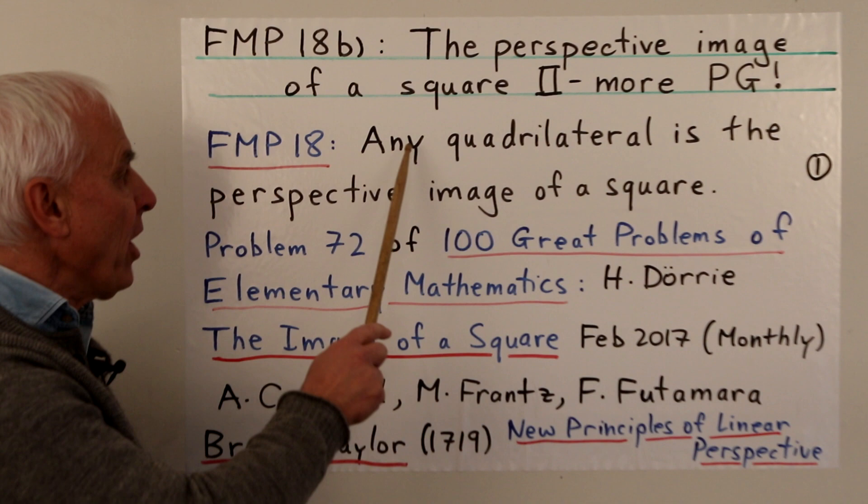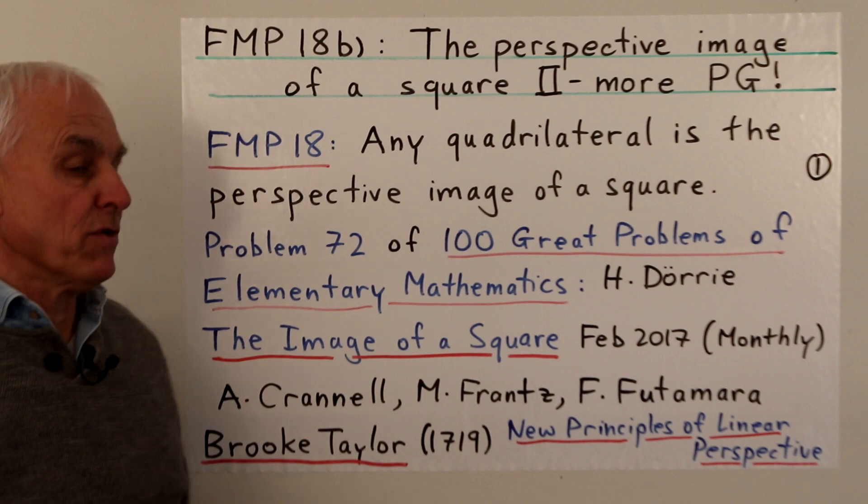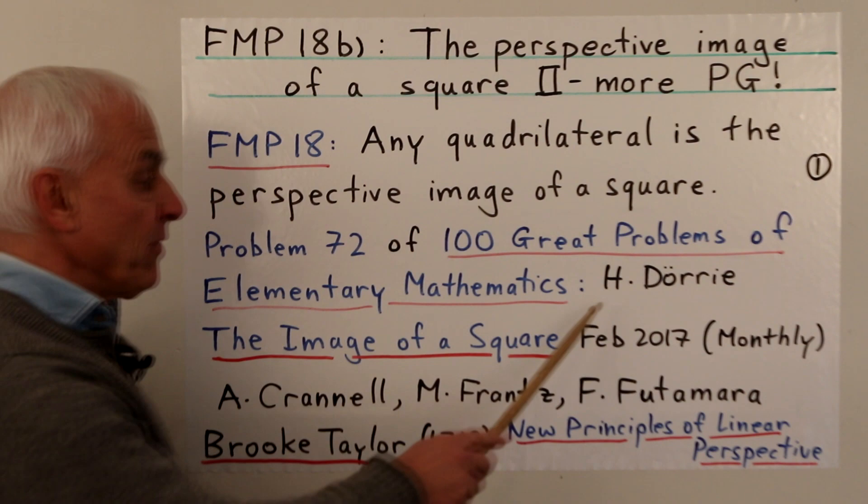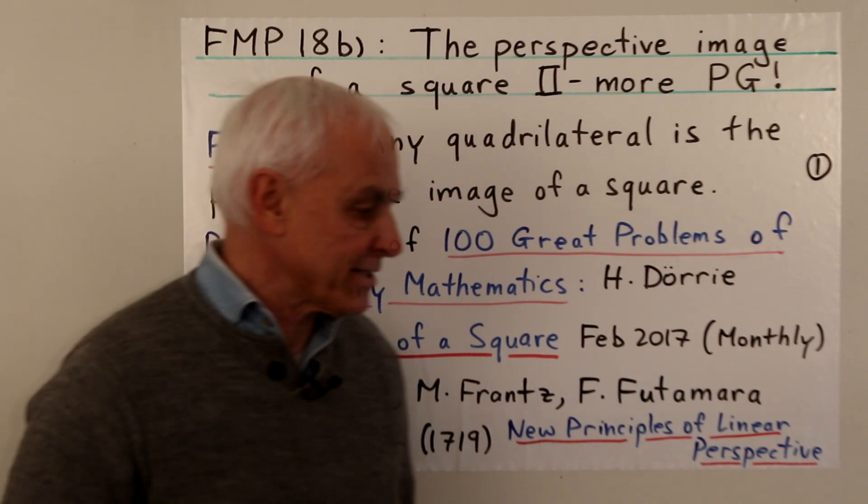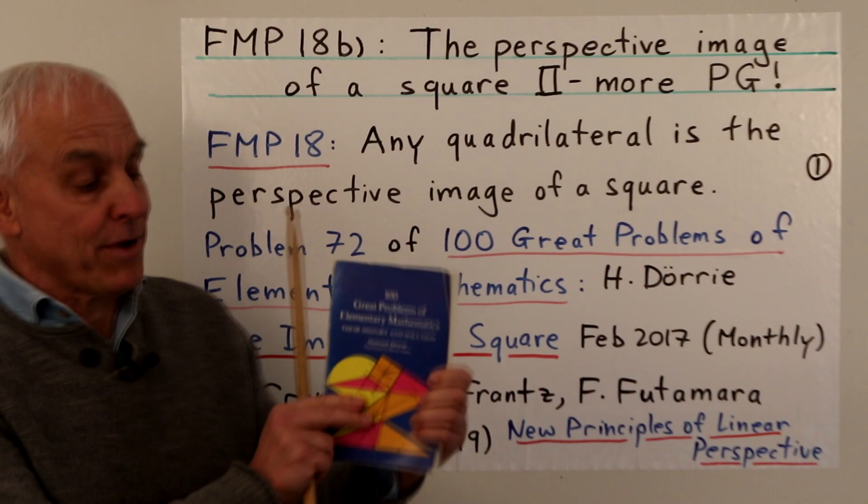Hello everyone, I'm Norman Wildberger. In this lecture we're going to carry on towards showing that any quadrilateral is the perspective image of a square. This famous math problem is actually problem 72 of Heinrich Dorey's classic book, 100 Great Problems of Elementary Mathematics, which is this thing right here — a lovely textbook.